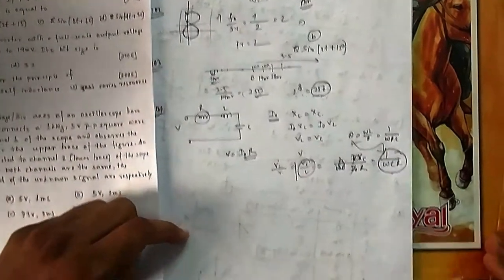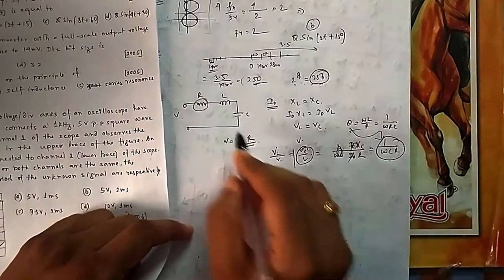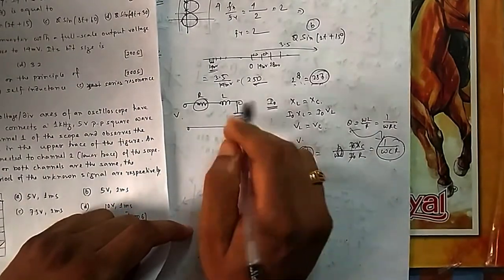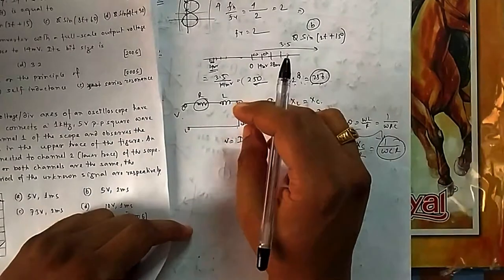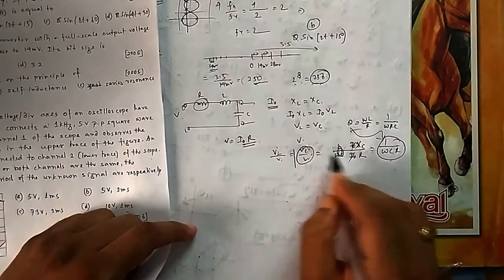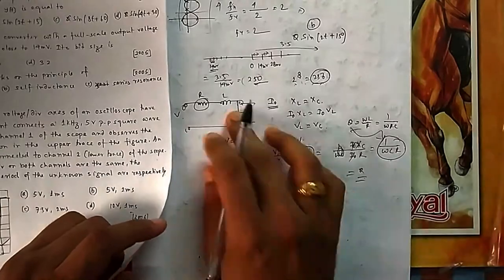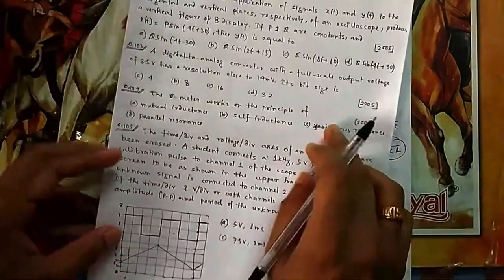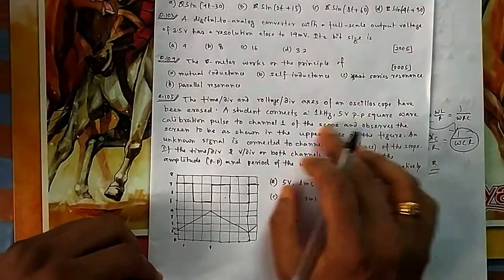By connecting a voltage sensor across the capacitor and comparing it to the source voltage, we measure Q directly. The ratio VC/V = XC/R gives the Q factor. This is how the Q-meter measures Q — it is based on the principle of series resonance.